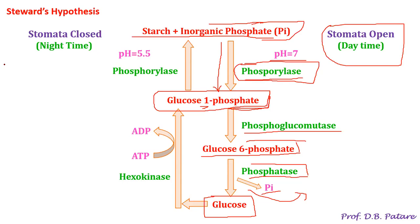This is the complete process of stomata opening involving two intermediates — glucose-1-phosphate and glucose-6-phosphate — and three enzymes: phosphorylase, phosphoglucomutase, and phosphatase. The pH is maintained at 7 or slightly alkaline, and this occurs under daytime light conditions.